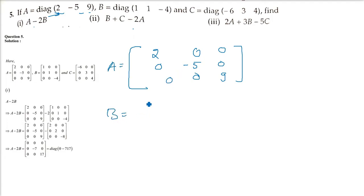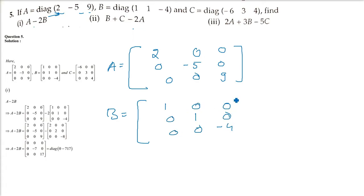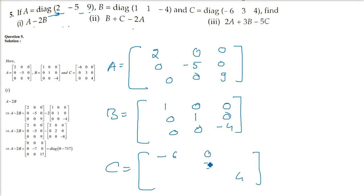Now for B — what will we do? We need A minus 2B plus C. Same thing: place B's diagonal values as minus 6, 3 and 4. All others are 0. Now A minus 2B is computed.